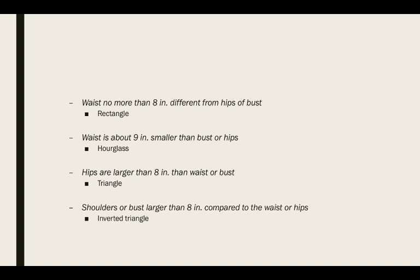Okay, so your waist, if it's no more than 8 inches difference from your hip or your bust, you're going to be a rectangle. If your waist is about 9 inches smaller than your bust or hips, you're going to be an hourglass. If your hips are larger than 8 inches, then your waist or your bust are a triangle. And if your shoulder or your bust is larger than 8 inches compared to the waist or your hips, you're an inverted triangle. Now, there's no good or bad shapes. I want to emphasize that. It's all just what it is. You can change how you look with fashion if you want to look like a different type of shape. But, this is important to note because for our next assignment, we are going to be designing a wardrobe. So, please pay attention because the rest of the stuff also matters for that.